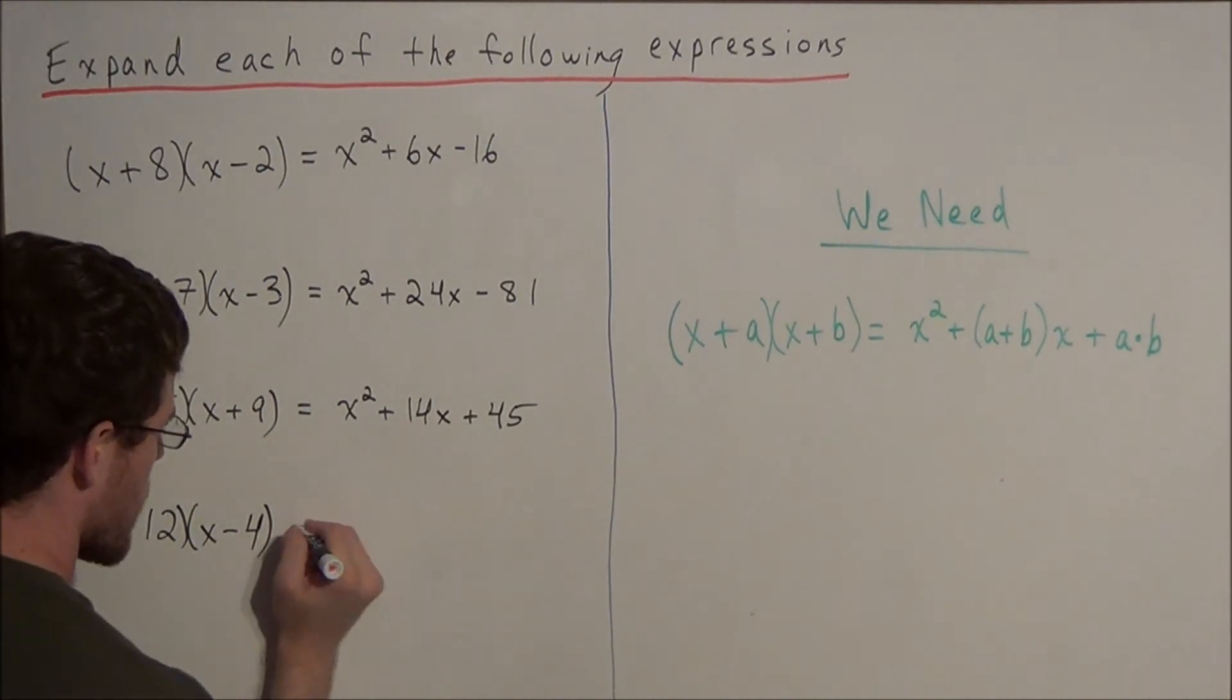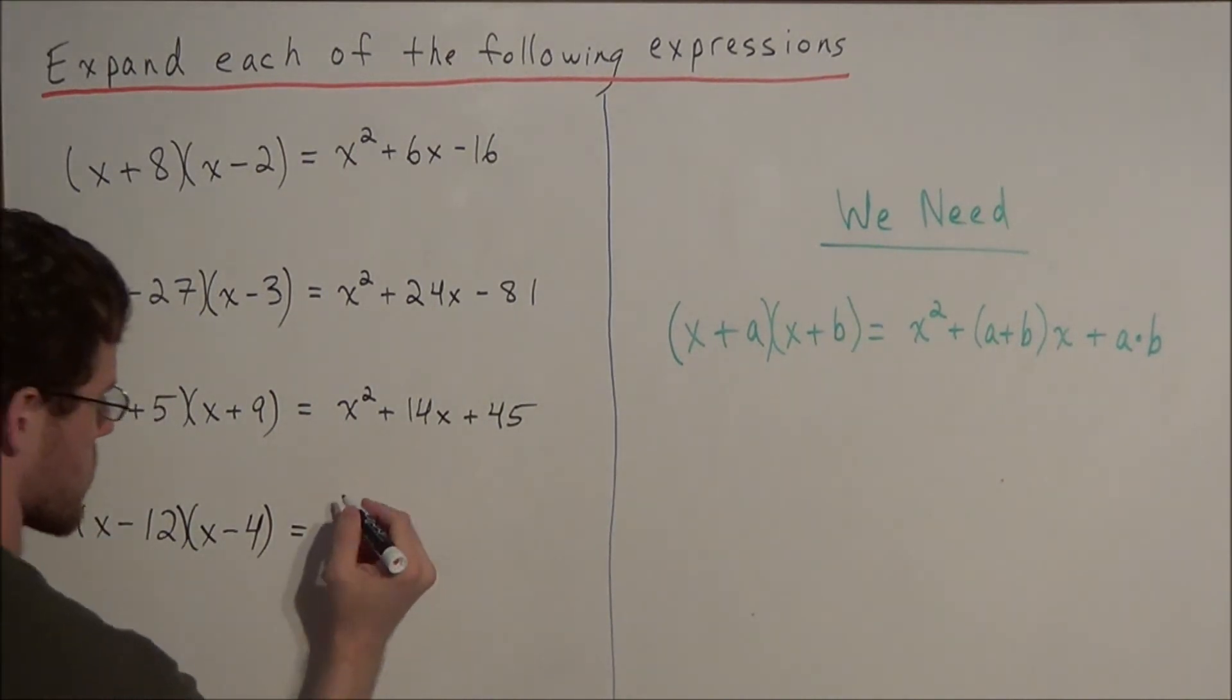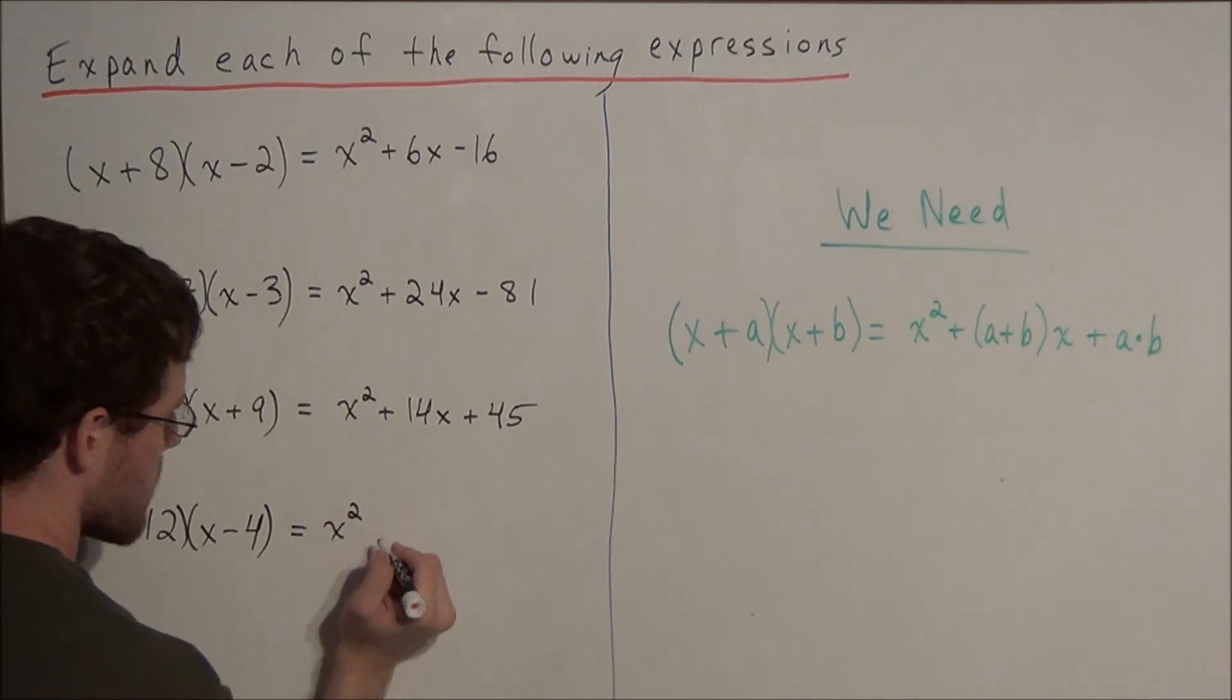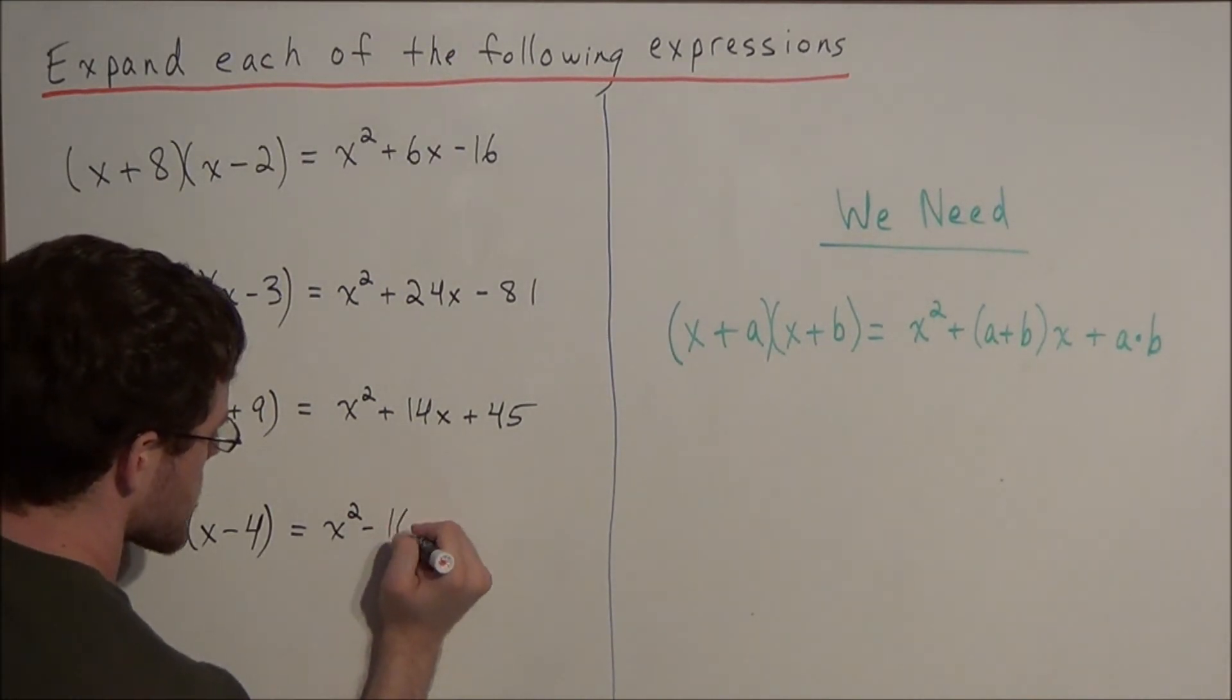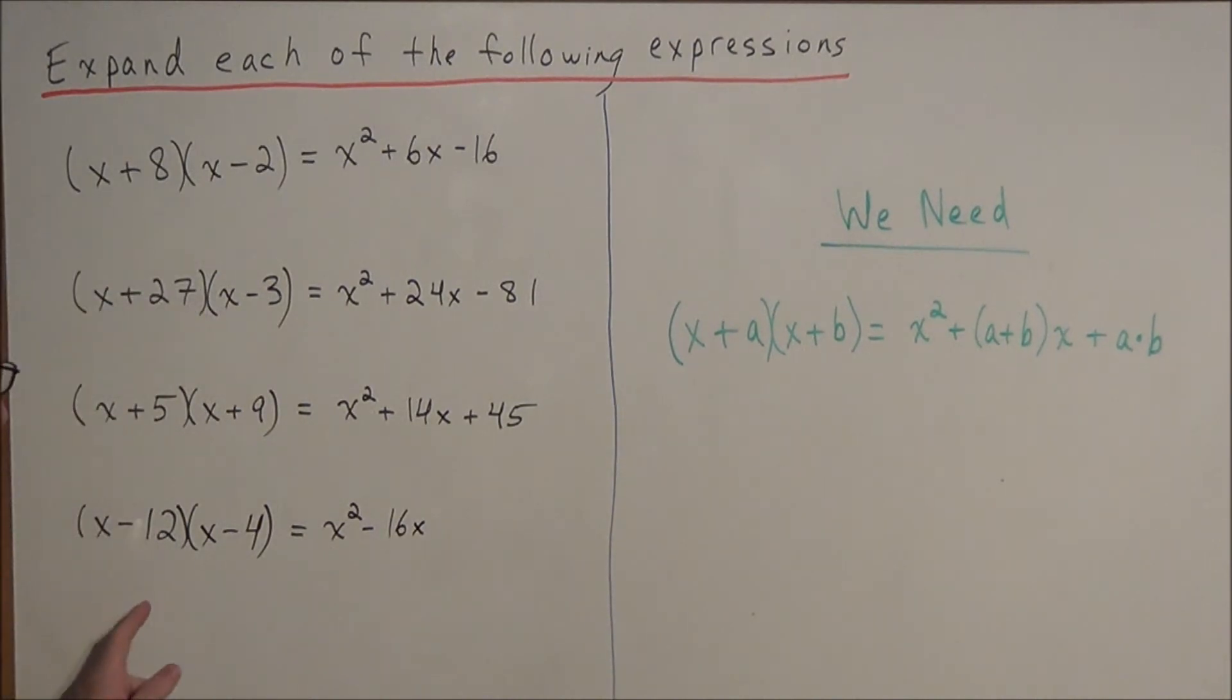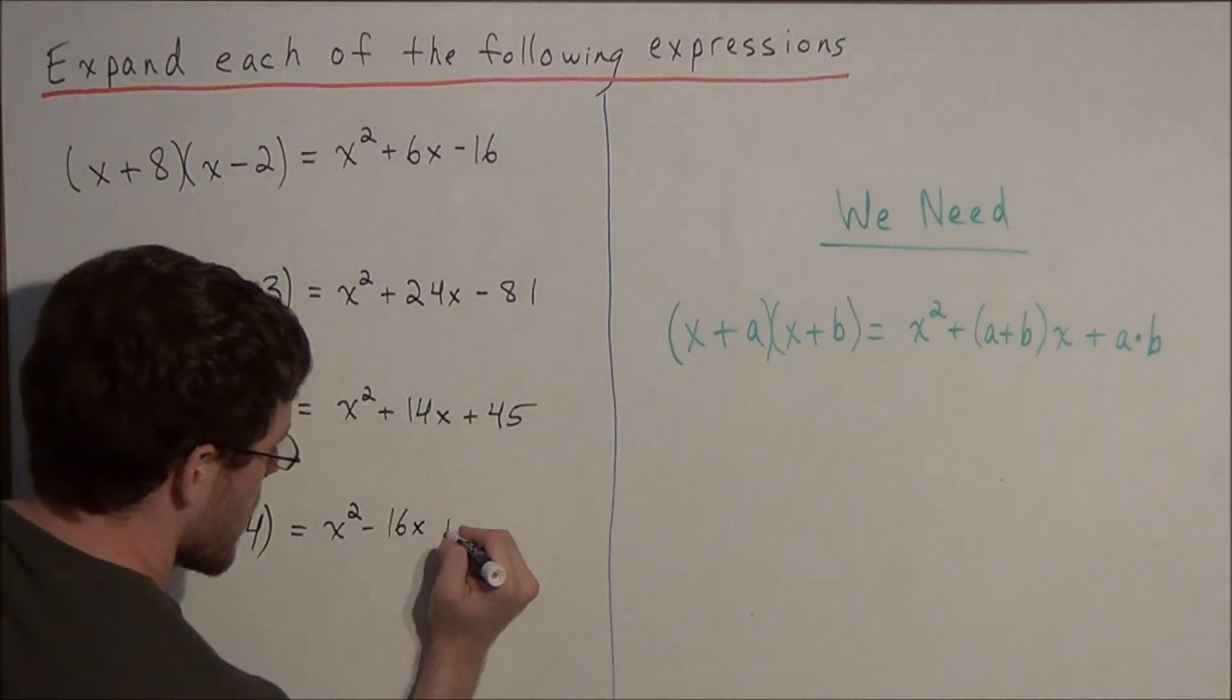So now for the last one, our first term is x squared. And now we have a negative 12 plus a negative 4, that's a negative 16, so we have minus 16x. And now negative 12 times negative 4 is a positive 48.